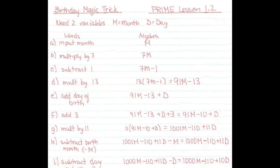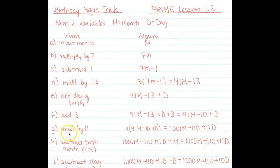Let's look at how to solve the magic math birthday trick. We're dealing with a month and a day, so we have two variables. I'm going to use m to represent month and d to represent day. One of the really important things to do when solving this is to organize it properly — on the left I have the words, and on the right I have the algebra that corresponds. I'll do it in a logical step-at-a-time fashion.